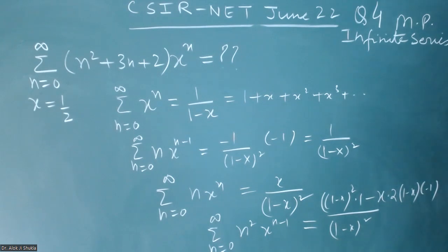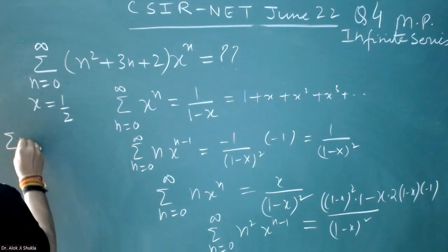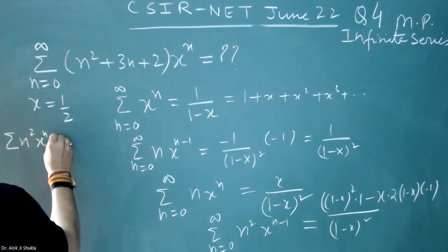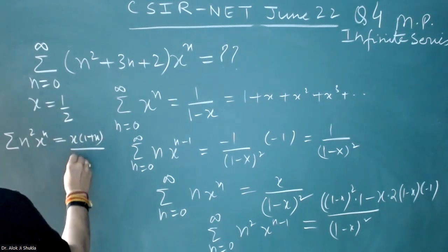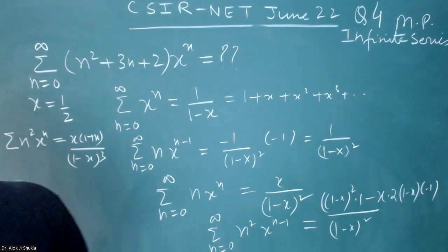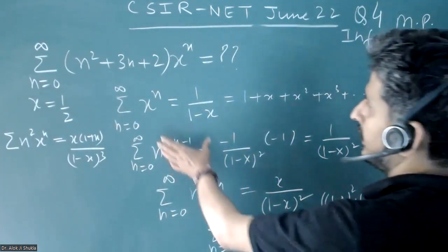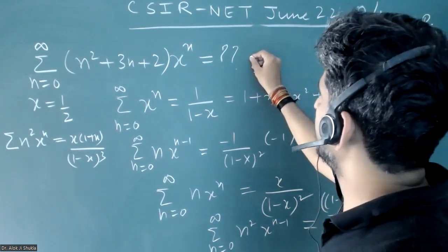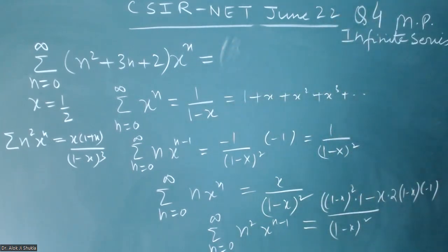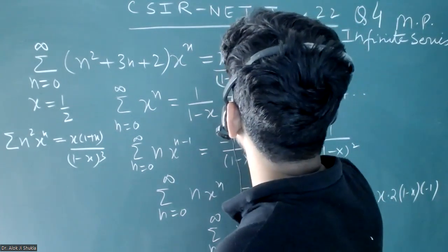Multiplying both sides by x again, we get summation of n²·xⁿ equal to x(1+x)/(1-x)³. Now adding all terms together: summation of n²·xⁿ equals x(1+x)/(1-x)³, plus 2 times summation of xⁿ.